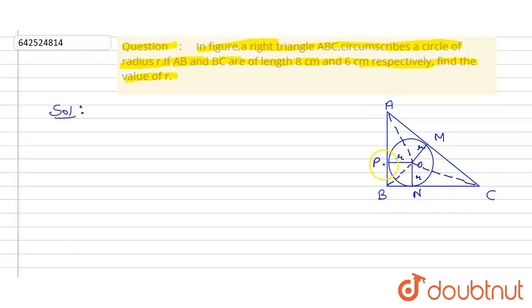We have drawn some tangents and radii for the circle, cutting on AC, BC, and AB. We are given that AB is 8 centimeters and BC is 6 centimeters. Now coming to the solution: